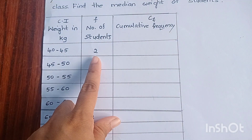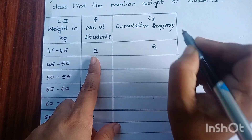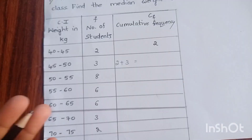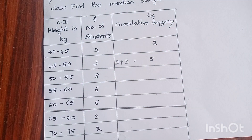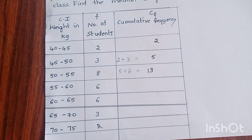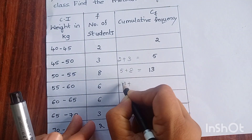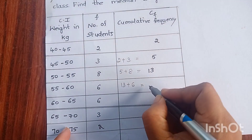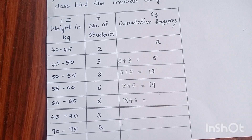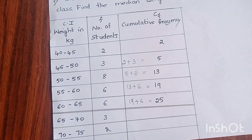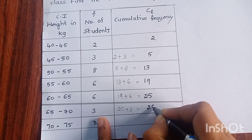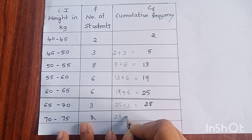We know that in the cumulative frequency, the first frequency we write as it is: 2. The next frequency is 2 plus 3, that is 5. Then 5 plus 8 is 13. Then 13 plus 6 is 19. 19 plus 6 is 25. 25 plus 3 is 28. And 28 plus 2 is 30.